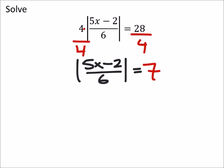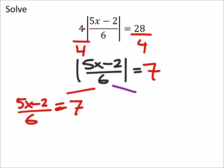Now we'll split this up into two separate equations. We got 5x minus 2 over 6 equals positive seven, and the other equation: 5x minus 2 over 6 equals negative seven.